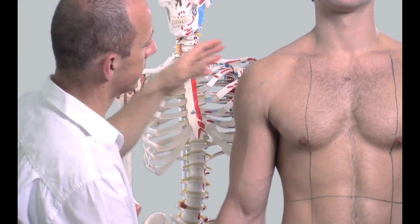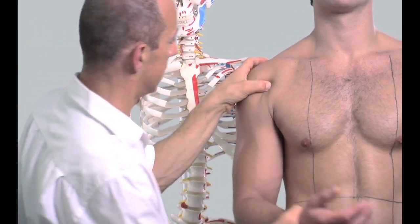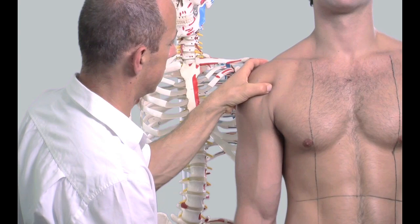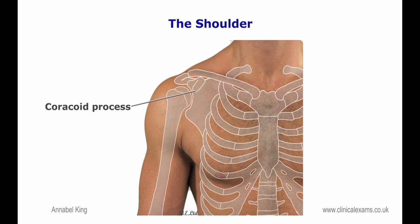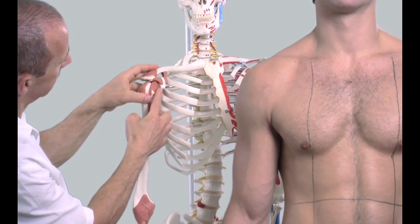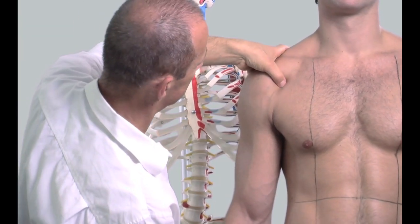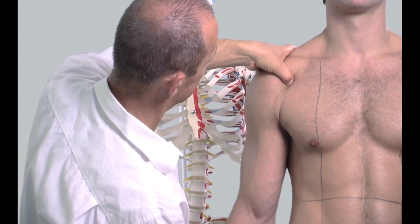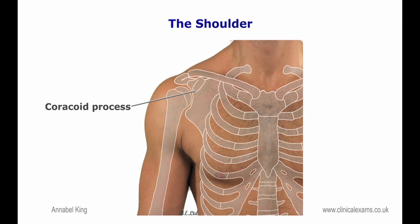The lesser tuberosity is just lateral to the coracoid process. Unlike the greater tuberosity, the lesser tuberosity is more difficult to palpate. The coracoid process is located inferior to the lateral one-third of the clavicle and almost inferior to the acromioclavicular joint. It may only be palpated with firm pressure; when you are over it, it will feel slightly tender to deep pressure. It is about one centimetre below the clavicle, deep to the medial border of the deltoid muscle.